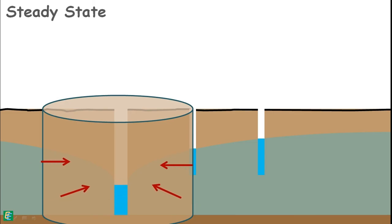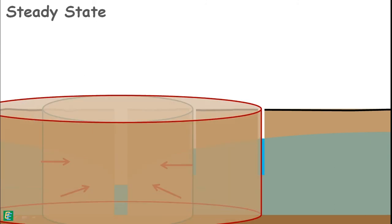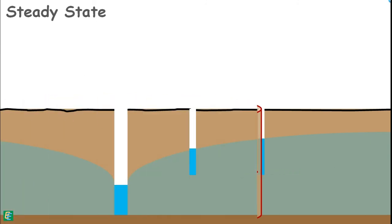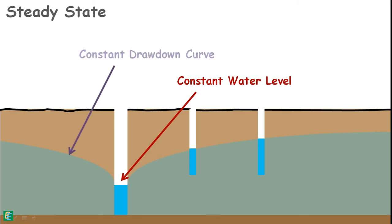And that is also equal to the rate of inflow water from this cylindrical surface. At this state, water level in the well will not change. In such a state, the drawdown curve becomes constant and the water level in the observation wells also becomes constant.